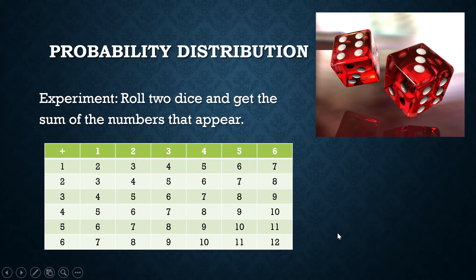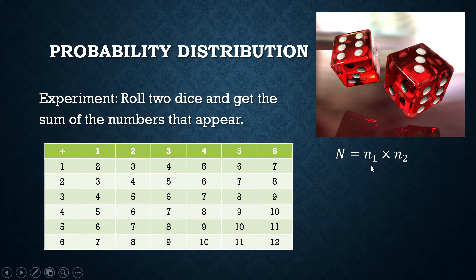This listing of outcomes is not yet your probability distribution. So how shall we produce it? First, what is the size of our sample space — the total number of possible outcomes? Recall your fundamental counting principle: if one experiment has n-sub-1 outcomes and the second has n-sub-2 outcomes, the total is n-sub-1 times n-sub-2. Die 1 has 6 outcomes and die 2 has 6 outcomes, so the size of our sample space is 36.